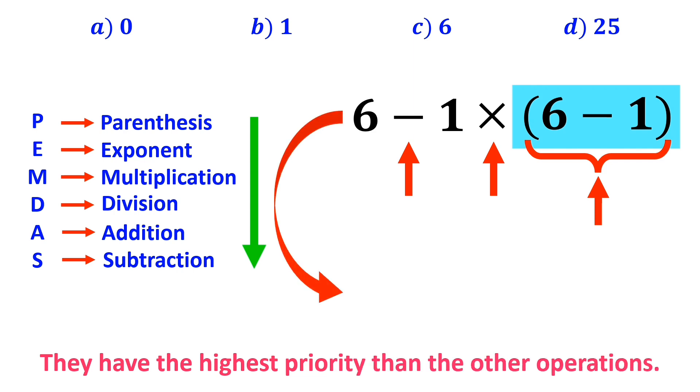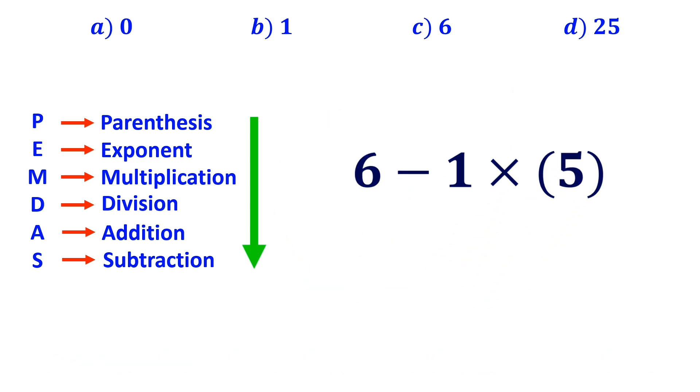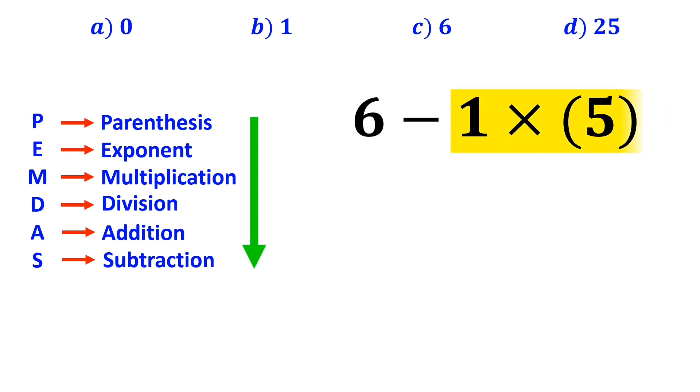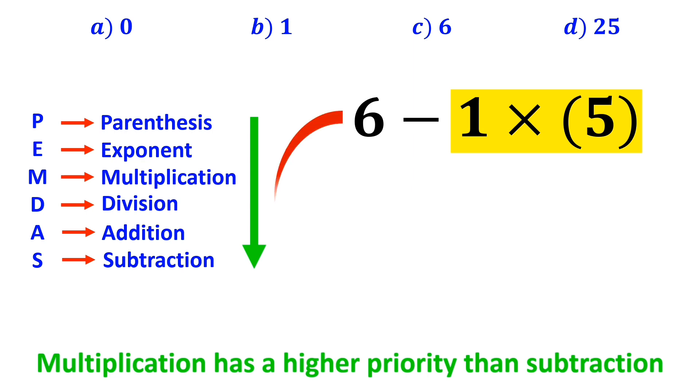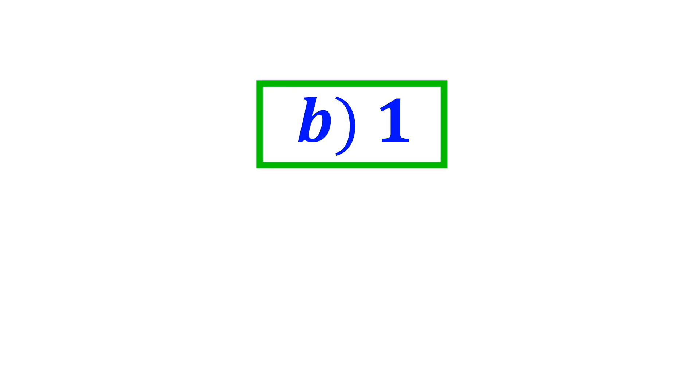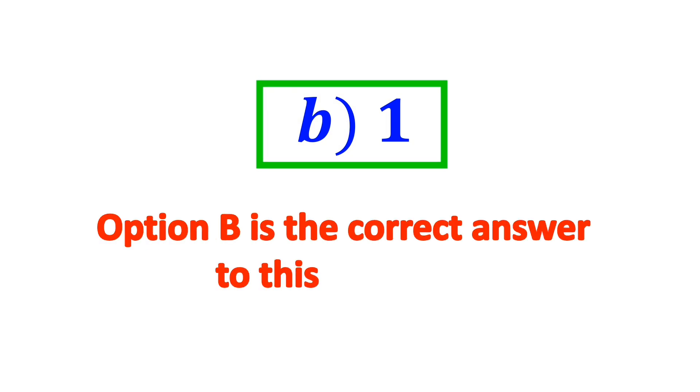So we can write this expression as 6 - 1 × 5. In the next step, we move on to the multiplication between 1 and 5, because multiplication has a higher priority than subtraction. So we derive this expression as 6 - 5. And finally, the value of this expression is equal to 1. Therefore, option B is the correct answer to this question.